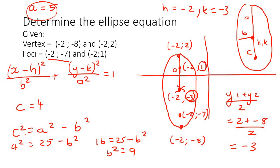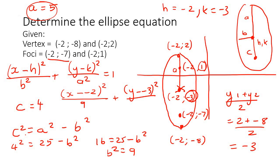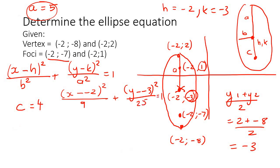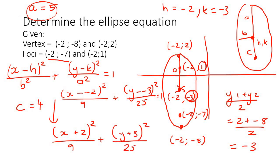We now have everything we need. H is negative 2, so we get x minus (negative 2), which gives x plus 2. B squared is 9. K is negative 3, so y minus (negative 3) gives y plus 3. A squared is 25. So the final equation is: x plus 2 squared over 9 plus y plus 3 squared over 25 is equal to 1.